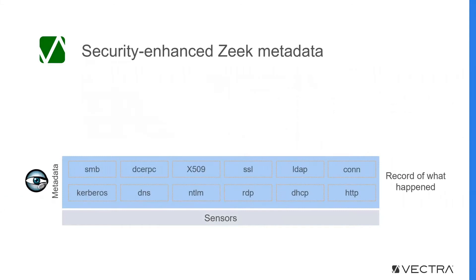CognitoStream extracts hundreds of metadata attributes from broad network traffic and presents them in a compact, easy-to-understand Zeke format.